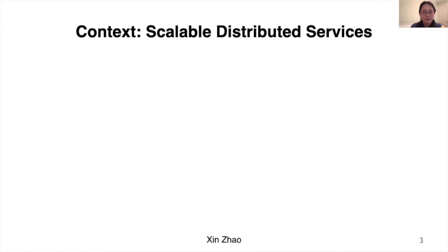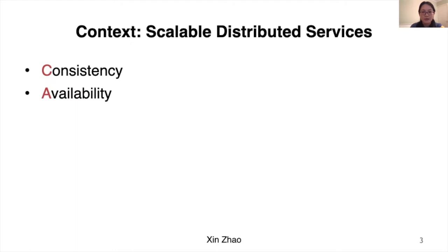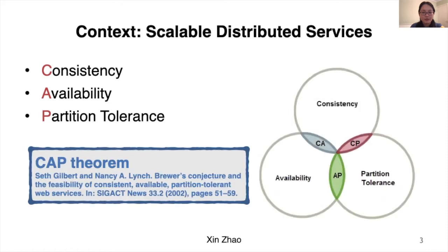There are three properties which are necessary to consider when building these applications. First is consistency, which means every read receives the most recent write or an error. Second is availability, which means every request receives a non-error response without the guarantee that it contains the most recent write. Third is partition tolerance, which means that the system continues to operate despite an arbitrary number of messages being dropped or delayed by the network between nodes. However, due to the CAP theorem, it's impossible for a distributed data store to simultaneously provide more than two out of the three guarantees.